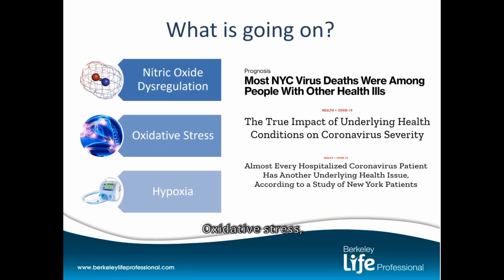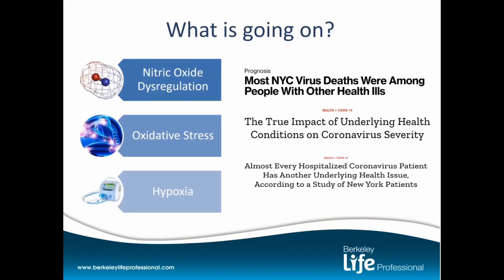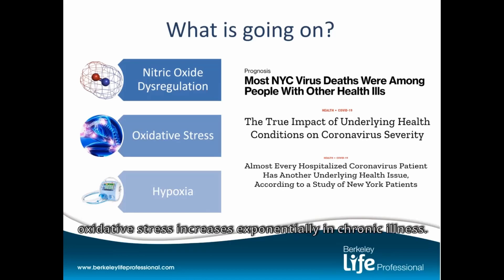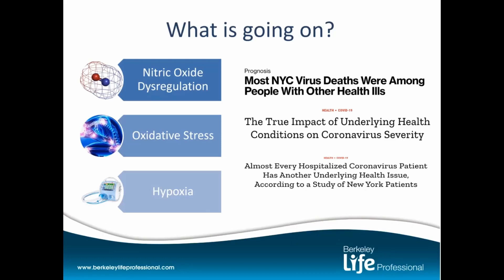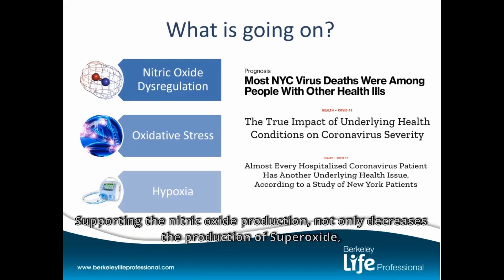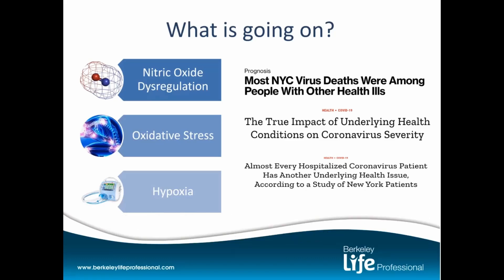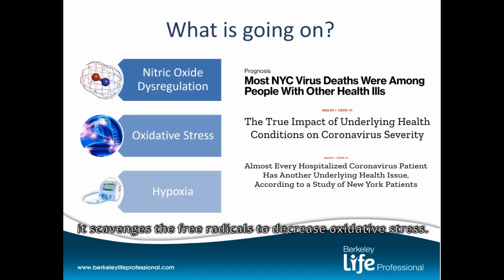Oxidative stress generates a lot of free radicals, and it increases exponentially in chronic illness. Supporting nitric oxide production not only decreases the production of superoxide, it also scavenges free radicals to decrease oxidative stress.